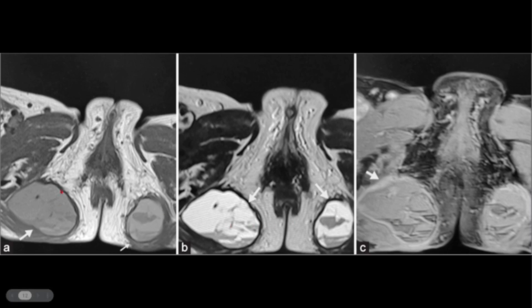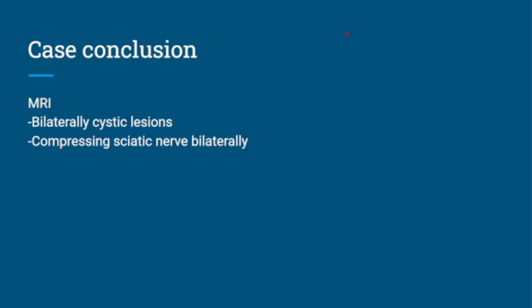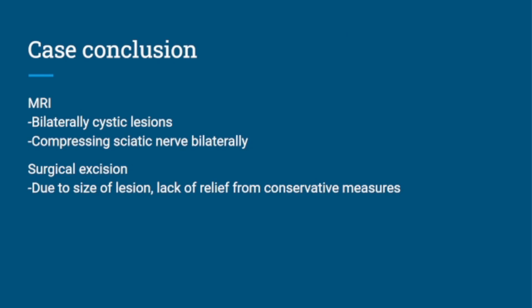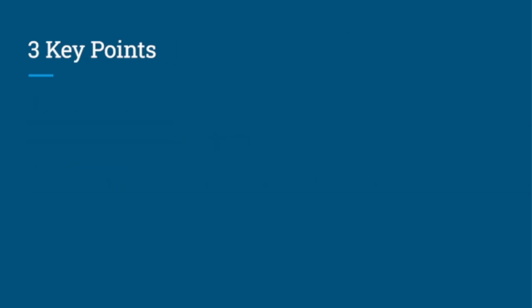On MRI, you can see cystic structures on both T1 and T2 weighted sequences, with some heterogeneous components as well. Essentially, these cysts are compressing the sciatic nerves bilaterally, which you could see scrolling through the full MRI. Because she wasn't getting better, she had surgical excision, and on follow-up she was doing very well — her symptoms had improved.